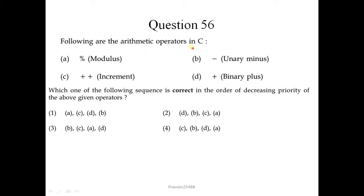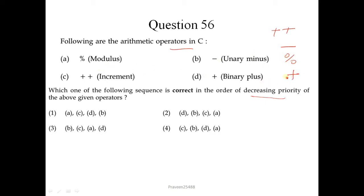Question number 56. Following are the arithmetic operators in C. Which of the following sequences is correct in order of decreasing priority? The decreasing order is: first is increment (either post or pre), then unary minus, after that there is modulus, and last is binary plus.